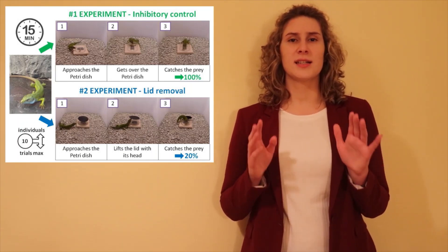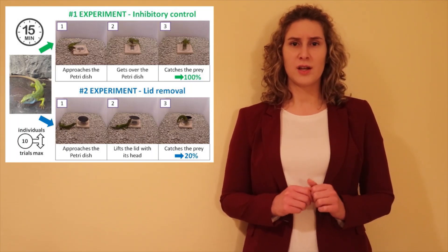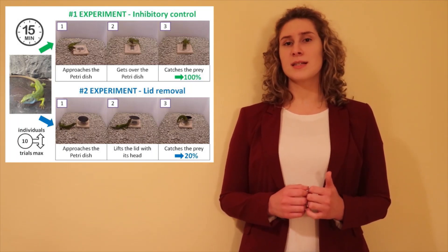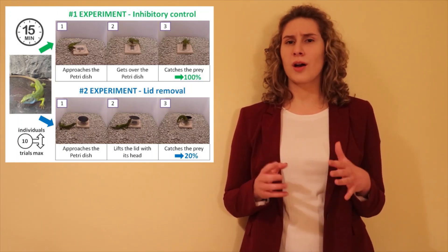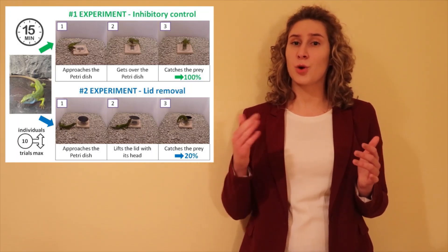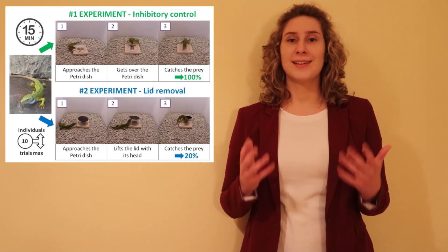Imagine a lizard in its natural environment and all the difficulties it may deal with. For example, sometimes lizards need to inhibit previously learned behavior that is no longer useful and perform detour behavior. The ability to do so is called inhibitory control.